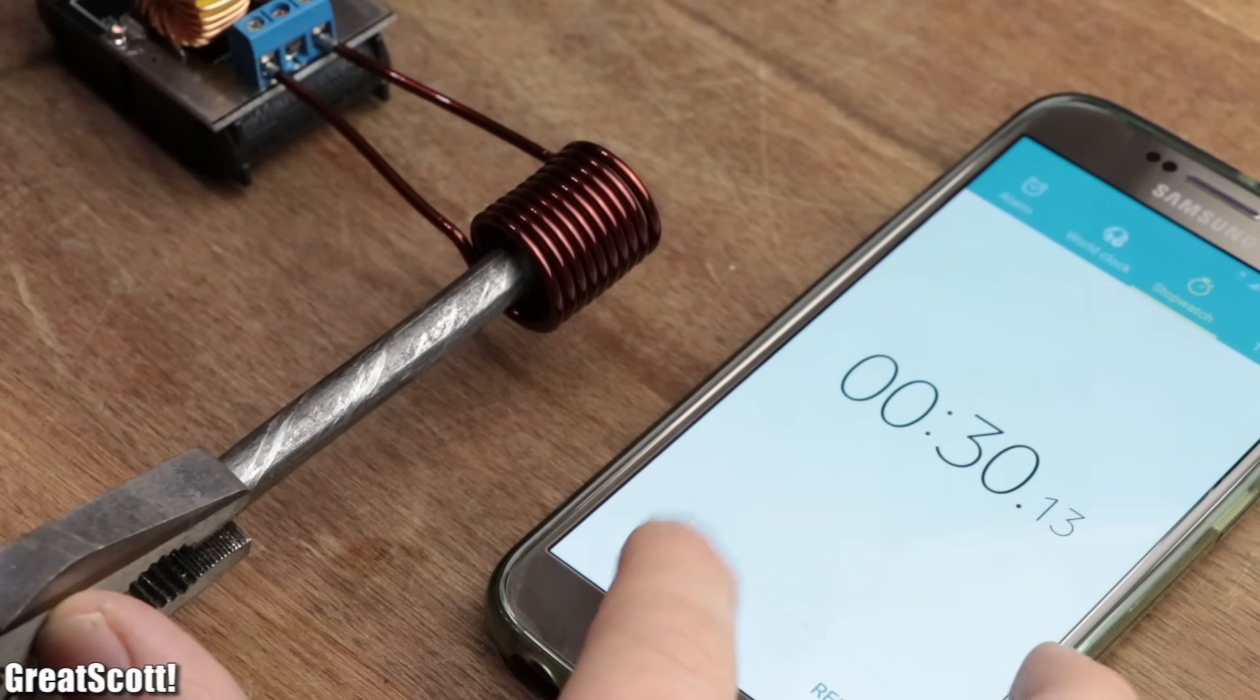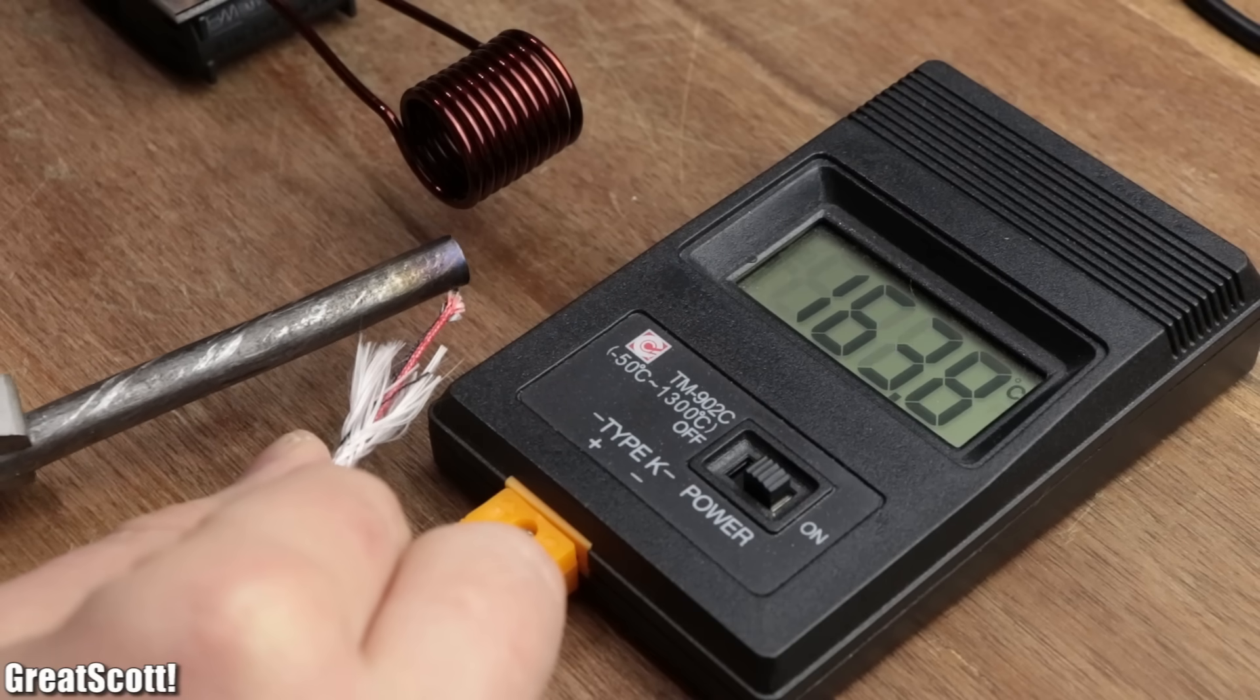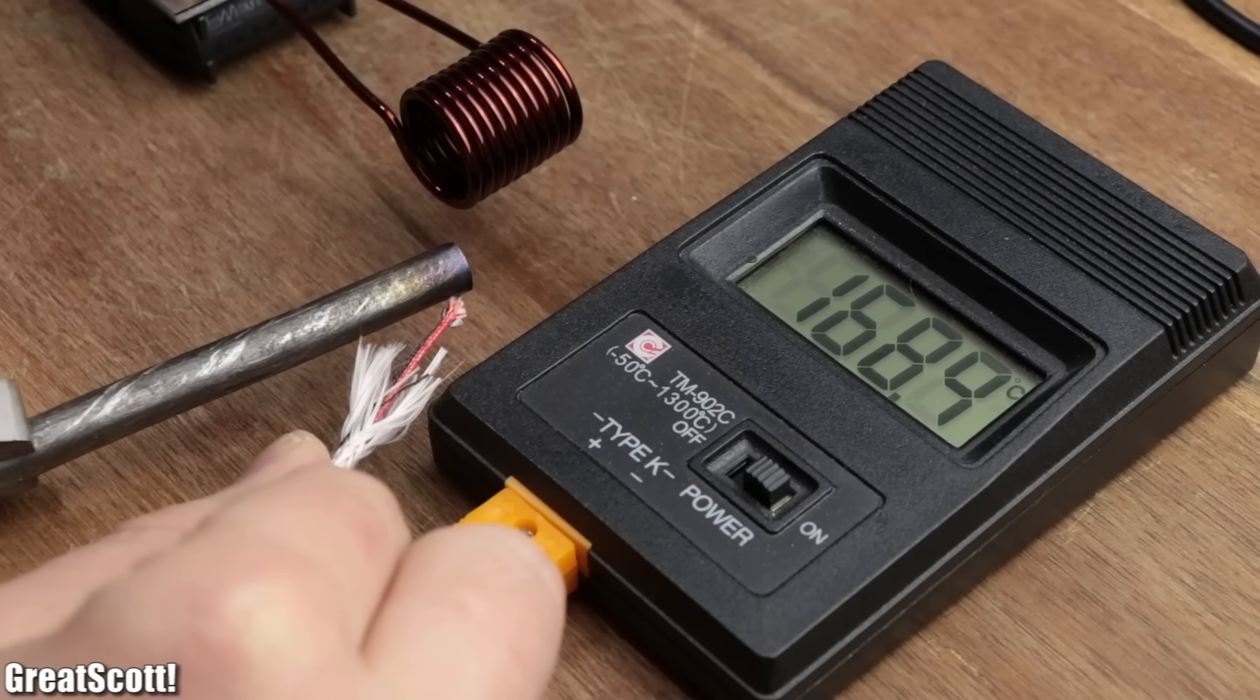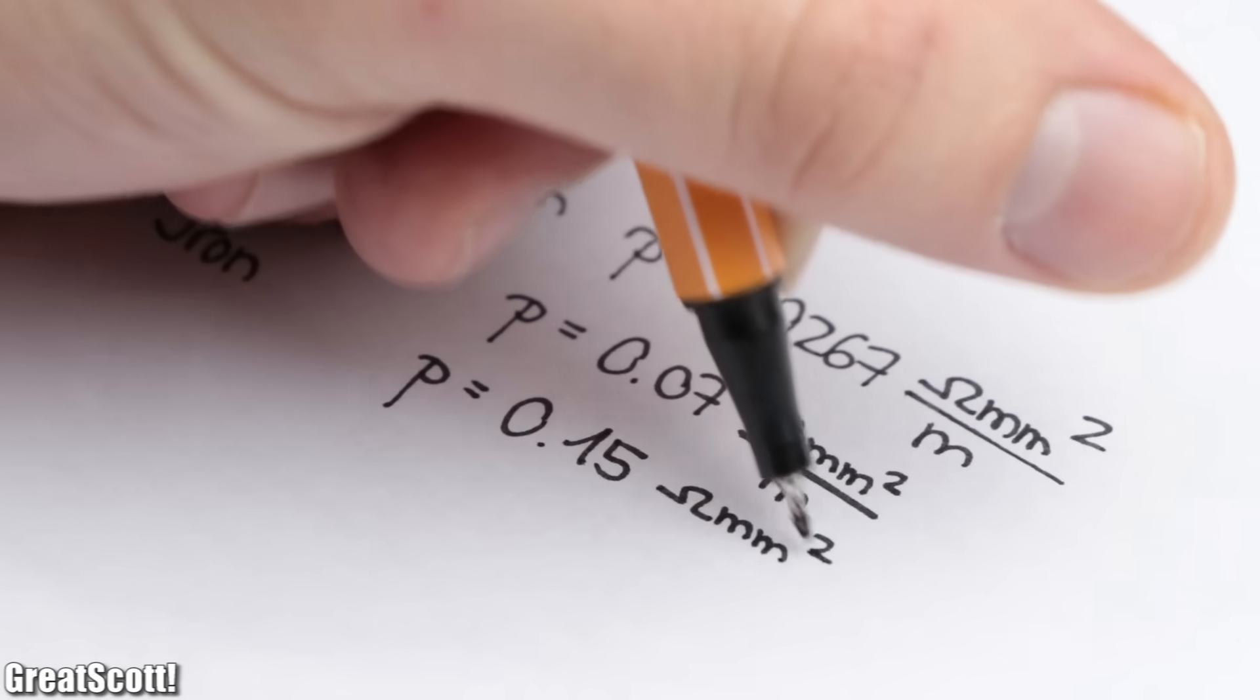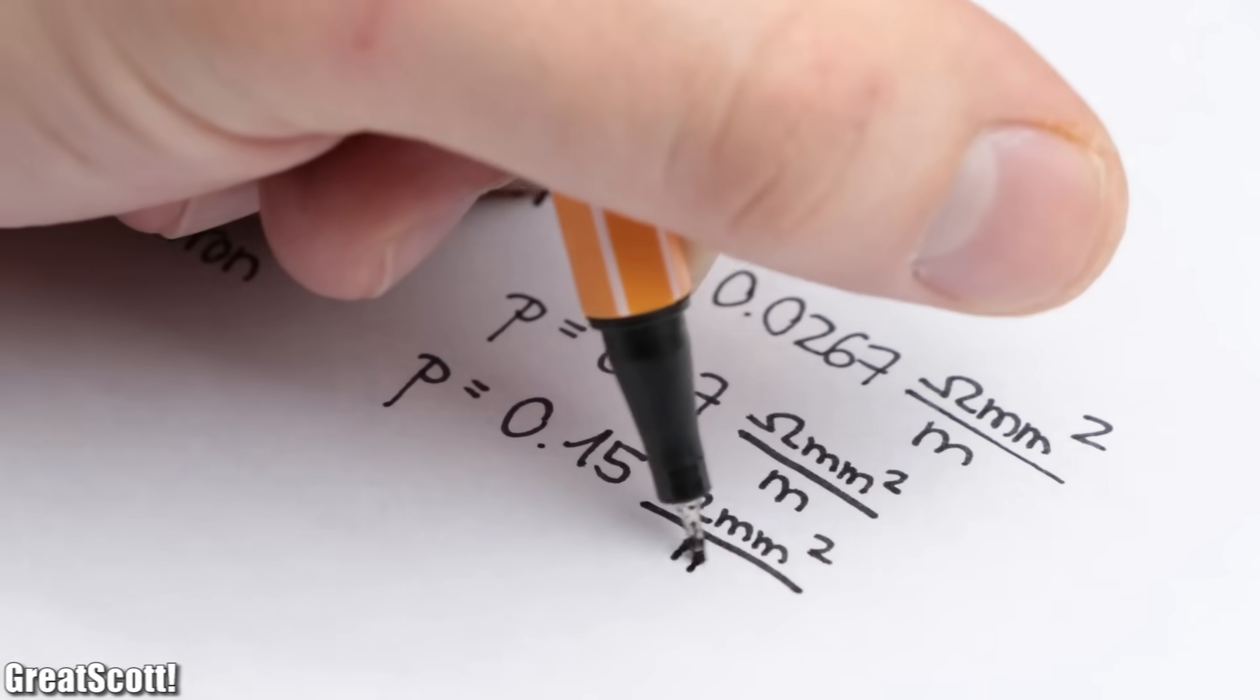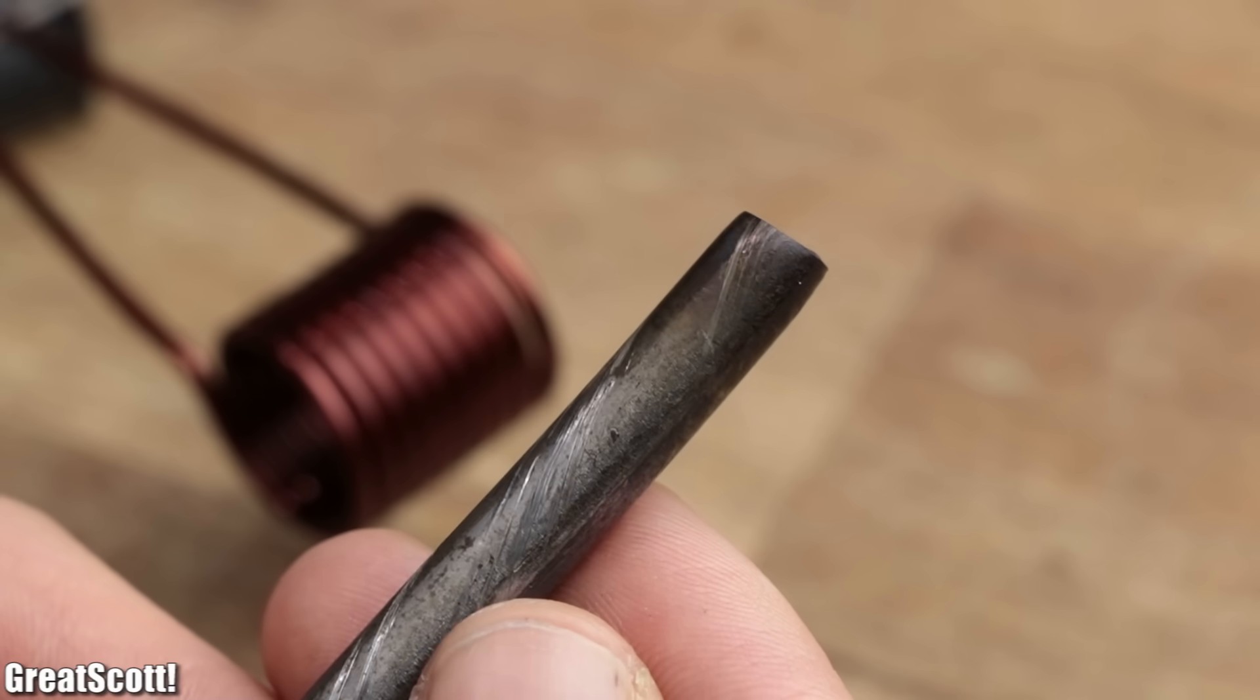After 30 seconds inside the coil, the tip of the iron easily reached a temperature of 160 degrees Celsius, which is quite a big difference compared to the other two.